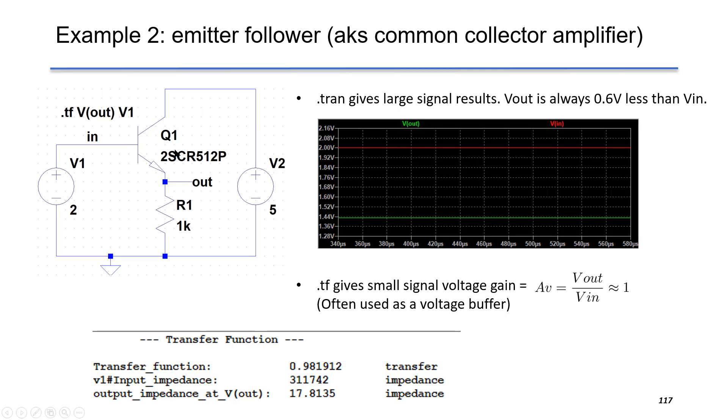If you look at the large signal in transient simulation in time domain as shown here, you can find V in as 2 volt and V out as 1.44 volt. The output voltage is V in minus the voltage drop over Vbe. This is a large signal.